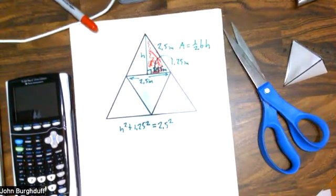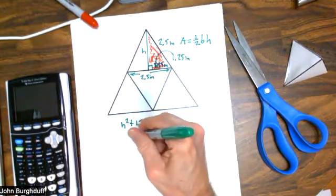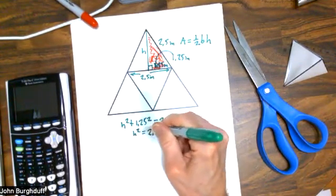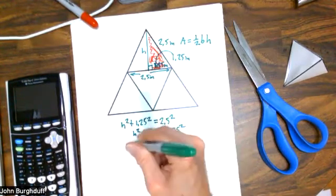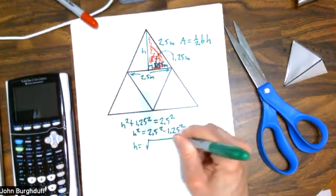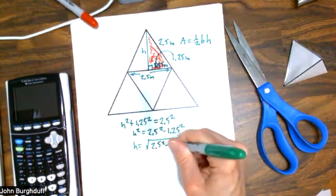I can solve that easily for H by subtracting 1.25 squared from both sides and then taking a square root.